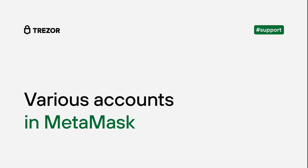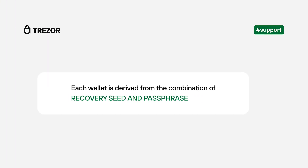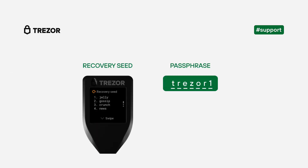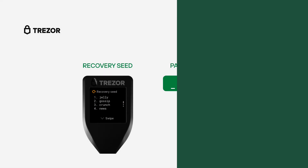In this video we will have a closer look at various types of accounts in MetaMask. Both Trezor and MetaMask follow the same standard to generate the wallet. This means that every single wallet is derived from a recovery seed and a passphrase. If the user does not enter any passphrase, an empty string is used instead, and the wallet is derived just from the recovery seed.